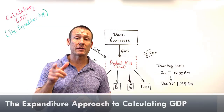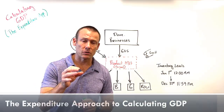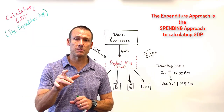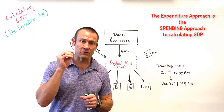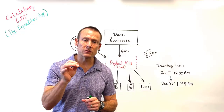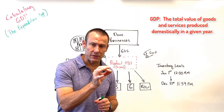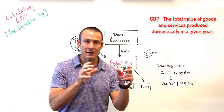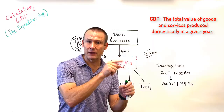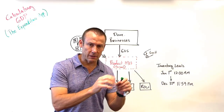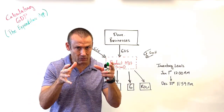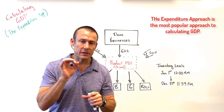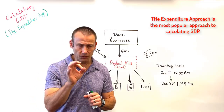In this video we are going to be calculating GDP using the expenditure approach — the spending approach to calculating GDP. The first thing to understand about GDP is what it is: it is the total value of goods and services produced domestically in a given year. That given year is called the current year, and one of the ways we try to calculate that amount is using the expenditure approach.